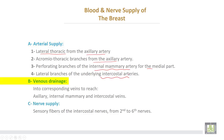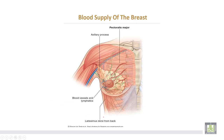The venous drainage is directed towards the corresponding veins to reach the axillary, internal mammary, and intercostal veins. Nerve supply consists of sensory fibers from the intercostal nerves from the second to the sixth.